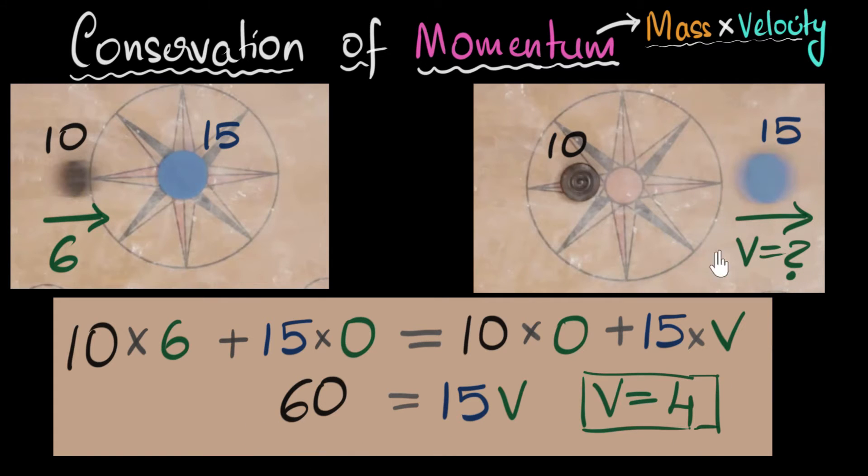So the blue coin after collision takes off with the speed or with the velocity of 4 units. So within few steps, we were able to calculate what is the velocity. Imagine we didn't have this. Then we'll have to use force and acceleration and maybe use some of Newton's laws. Ah, that would be so tedious. But with conservation of momentum, within few steps, we get the answer. That's why we love it so much.